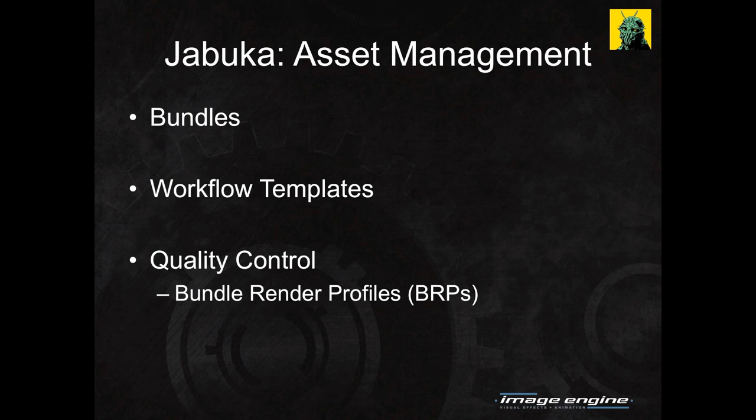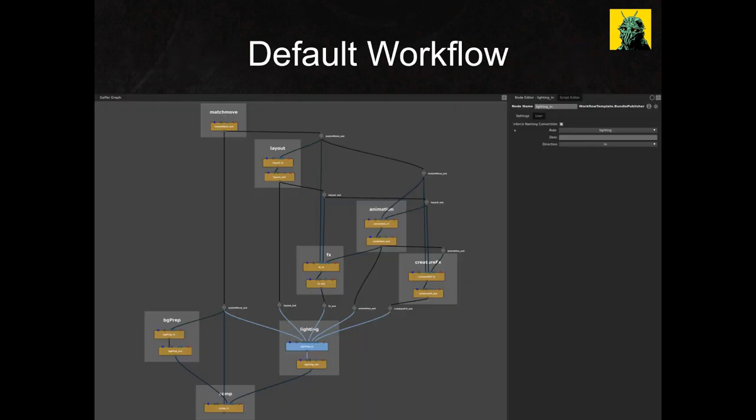Bundles are department-specific groupings of asset components that belong in each shot. CG supervisors build workflow template graphs which use bundles to define the relationship between departments on their show. This image shows a default workflow for a VFX film, highlighting inputs to lighting. It's important to note that no data is being computed here — this is merely an informational template that Ubuka queries from time to time. When an artist publishes an output bundle, all the downstream input bundles become out of date, until other artists choose to pull those new components into their bundles.